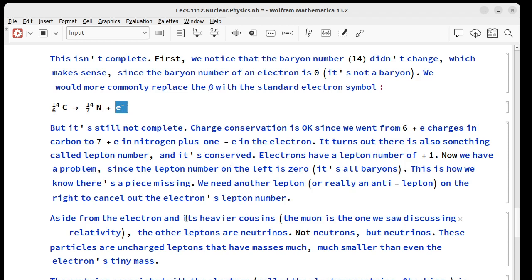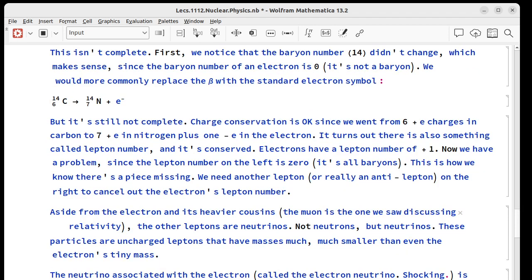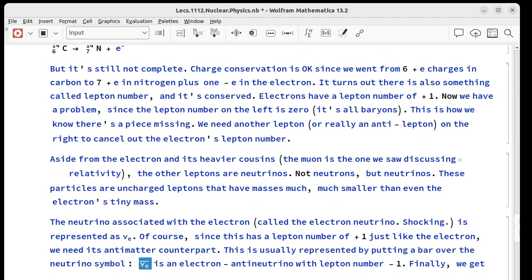It turns out, besides the electron and some heavier cousins, the other leptons are neutrinos. That's not a neutron, but a neutrino. These things are uncharged, and they have masses much, much smaller than even the electron's mass. So there's a neutrino associated with the electron, with the muon, with these other particles. And of course, it's called the electron neutrino, and we write it with a Greek nu, with a subscript e. Now, this has a lepton number of plus 1, so this wouldn't help. If we added one of those, we've just got a lepton number of 2 on this side and 0 going in. So what we really need is the anti-neutrino, and we indicate that by putting a bar over this. So the real decay for carbon-14 dating is we get nitrogen-14, an electron, and an electron anti-neutrino.